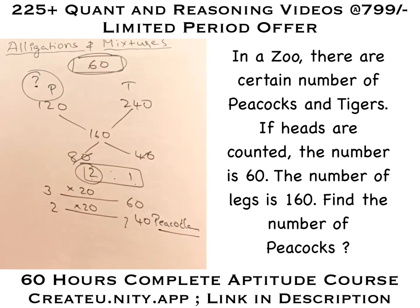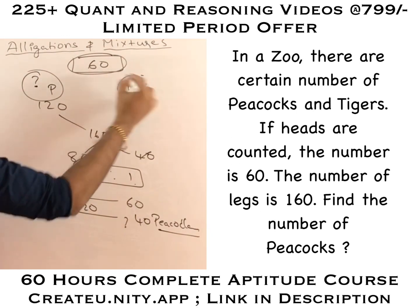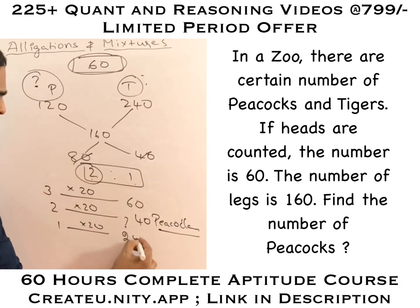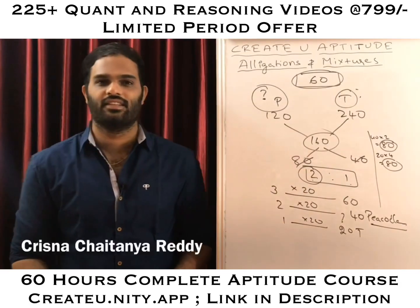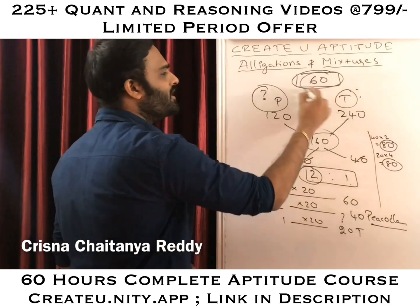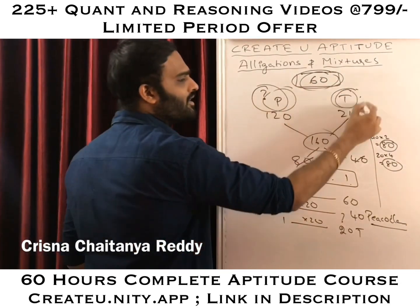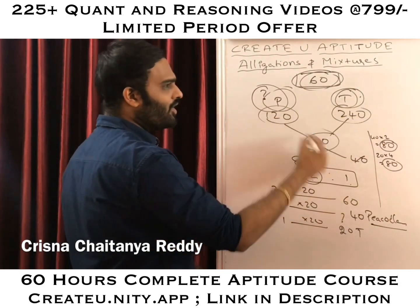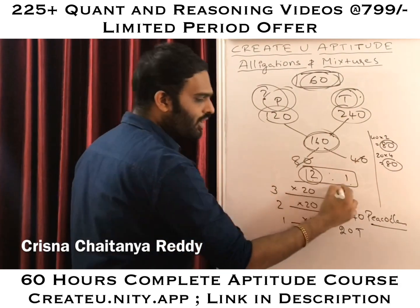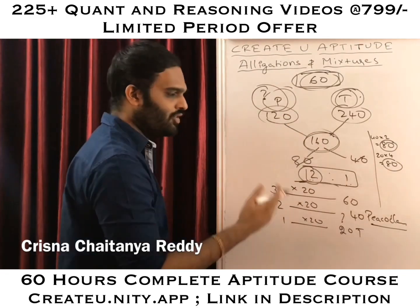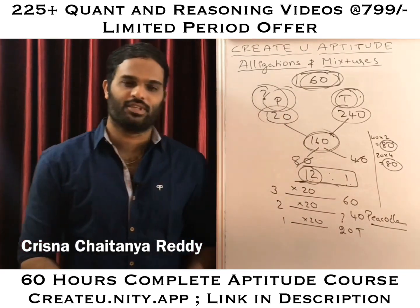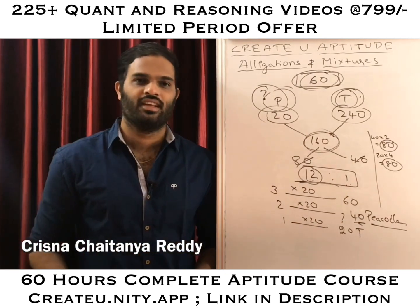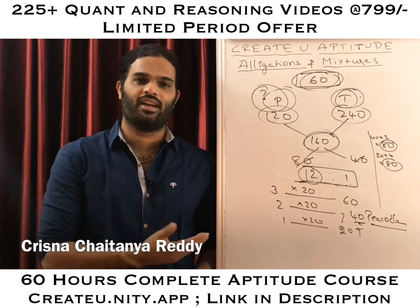The number of peacocks are 40. And if the question was the number of tigers, then I would have gone for one part — 1 into 20, it would have been 20 tigers. The only thing is you have to assume that everything is a peacock and everything is a tiger. Then you will get total 120 legs and 240. But because they have a mixture, it is 160. You got the ratio, total is 60, 3 parts is 60, then 2 parts and 1 part follow. Let us try another one so that you will get a better understanding.